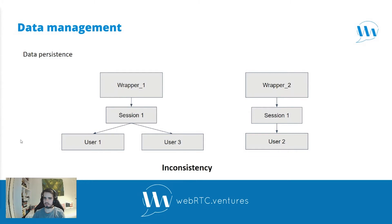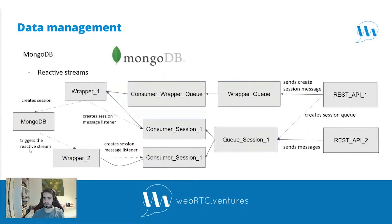So we decided to use a MongoDB database to store all the data related to a session — the users, their connections, and some other data. This way, we are able to process requests from all instances and the data will be consistent since we will be reading from and writing to MongoDB. When we create a session, a message is sent to the REST API from the client, it creates a session queue, and sends a create session message to the wrapper queue. This message is consumed by only a single wrapper — in this case wrapper one.